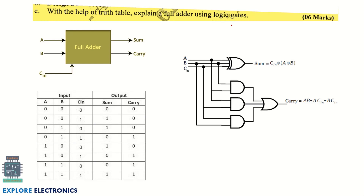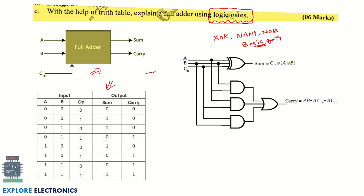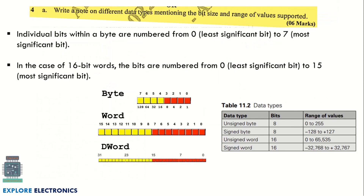The next question asks you to explain a full adder using logic gates with a truth table. Since the question does not restrict which gates to use, you can use XOR, NAND, NOR, or basic gates as needed. Read the question carefully — if basic gates are specified, only AND, OR, and NOT are allowed. Draw the full adder block diagram, truth table, and circuit using XOR gates, AND gates, and an OR gate.